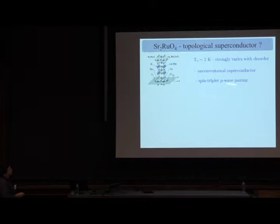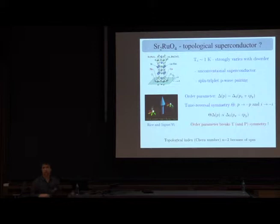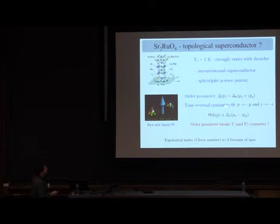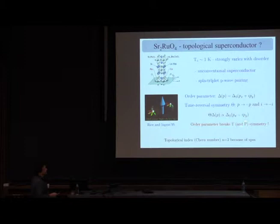We also know from susceptibility measurements that it is a triplet superconductor. I want to review the evidence for time-reversal symmetry breaking in this superconducting state. The proposed order parameter is Px + iPy. Under time-reversal, this order parameter does not return to itself — it actually breaks time-reversal symmetry as well as two-dimensional parity.